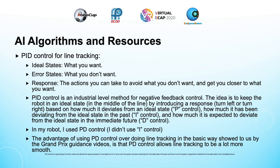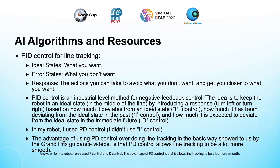We also decide the response based on how much the system has been deviating from the ideal state in the past, which is called I control. And lastly, we decide the response based on how much the system is expected to deviate from the ideal state in the immediate future, which is called D control. P stands for Proportion, I and D stand for Integral and Derivative, but it is beyond the scope of this presentation to go more in depth than that. If you're really interested, I would encourage you to find out more online. For my robot, I only used P control and D control.